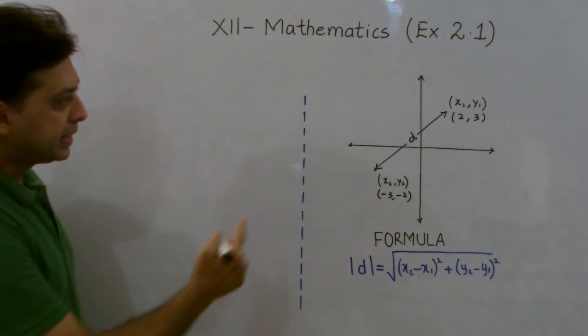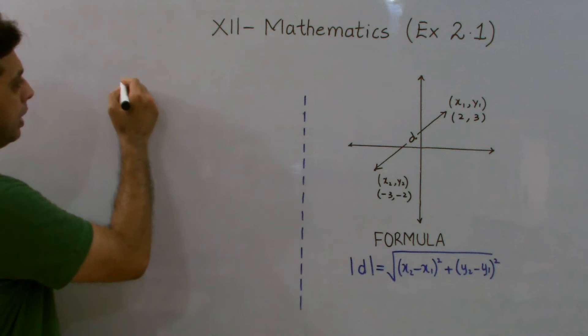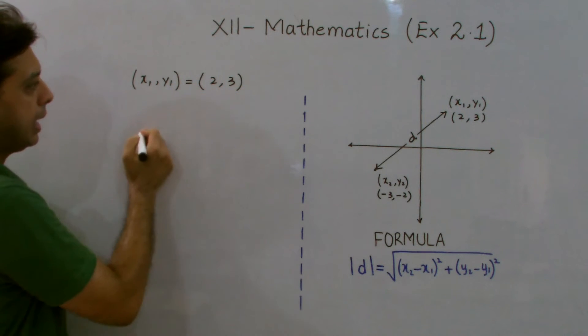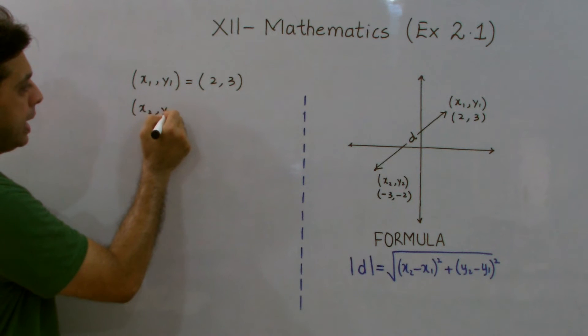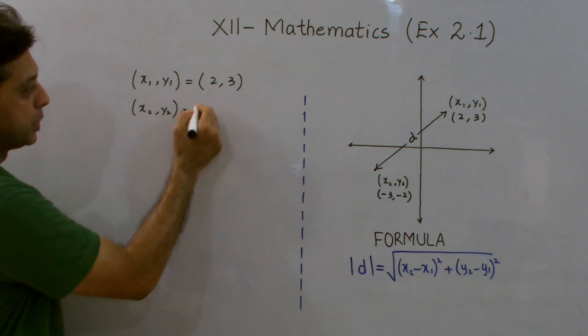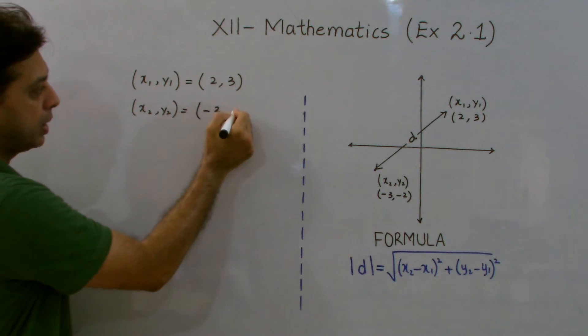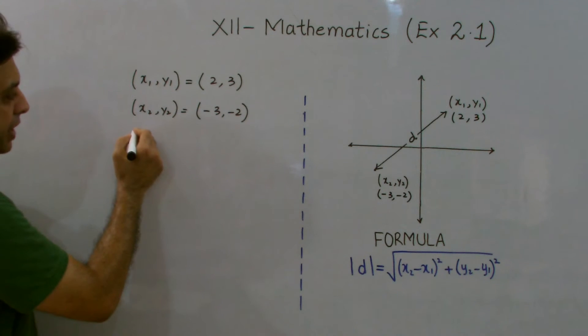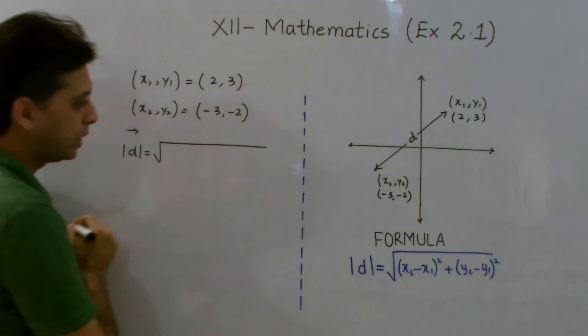If I'm looking for the distance between these two coordinates, then I have to express this as x1, y1 equals to 2, 3 and x2, y2 equals to minus 3, minus 2. Now, I have to give the reference of the distance formula here and this is how I can substitute the value in the given formula.